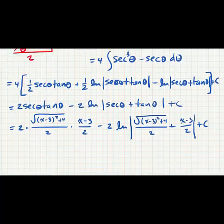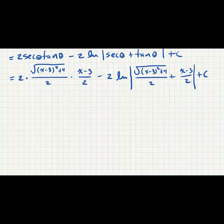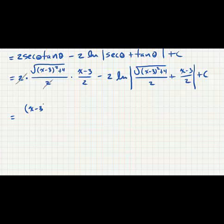And now let's simplify this. We can clearly cancel a factor of 2. And we will be left with the quantity (x - 3) multiplied by the square root of (x - 3)^2 + 4, all divided by 2, minus 2 times the natural log. Now here's the tricky part.